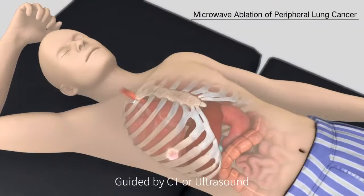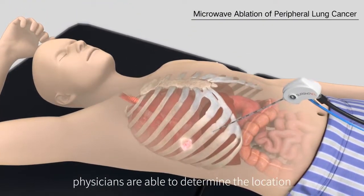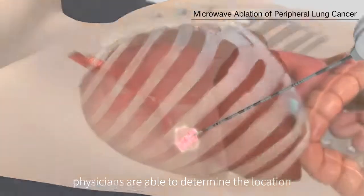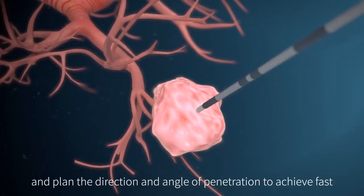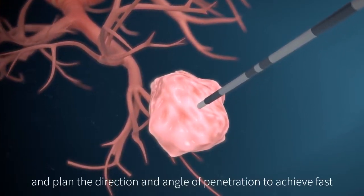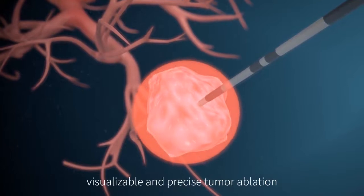Guided by CT or ultrasound, physicians are able to determine the location of the peripheral lung tumor and plan the direction and angle of penetration to achieve fast, visualizable, and precise tumor ablation.